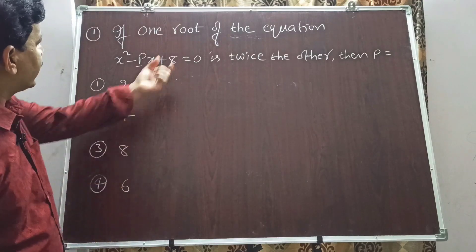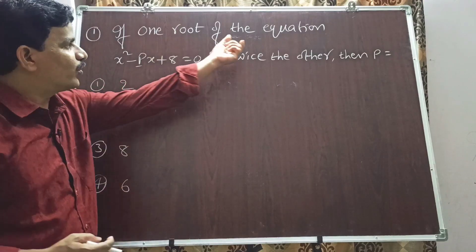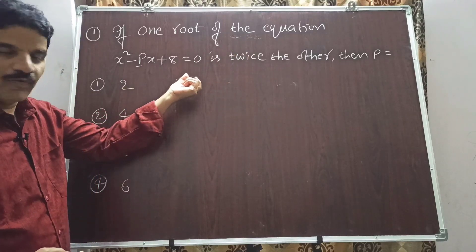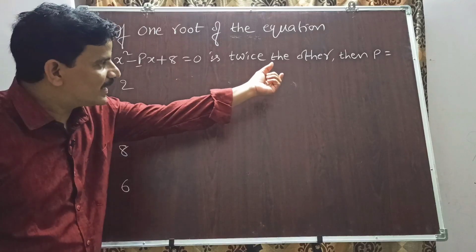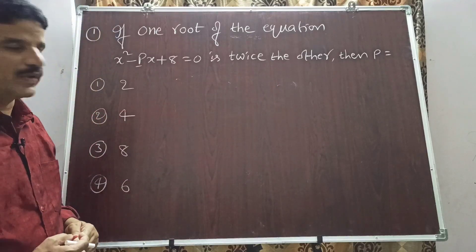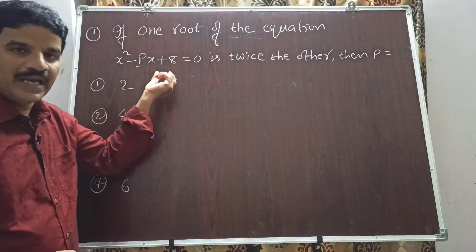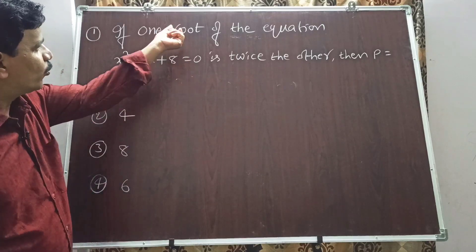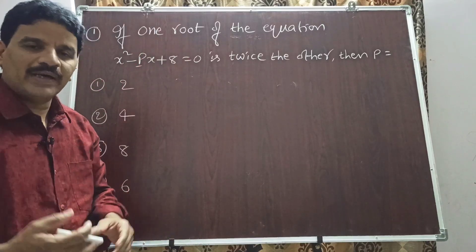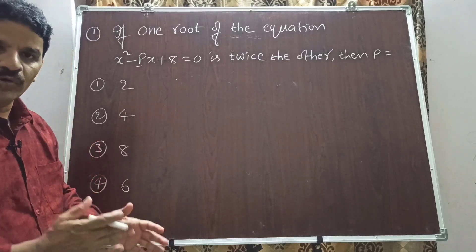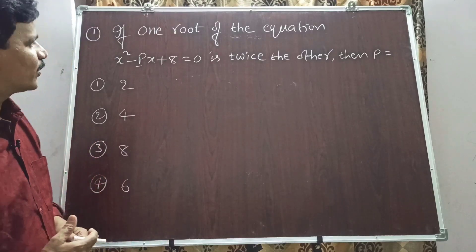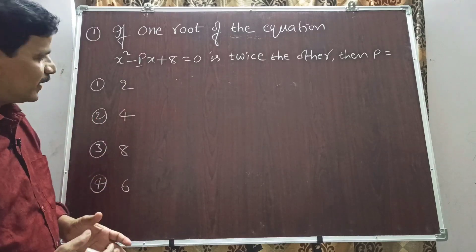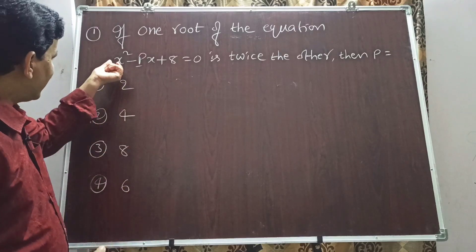Question 1: If one root of the equation x² - px + 8 = 0 is twice the other, then p equals how much? For this quadratic equation, let one root be alpha and the other root beta equal to 2·alpha, since one root is twice the other. We need to find p.